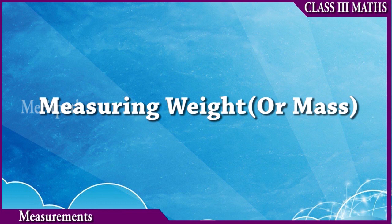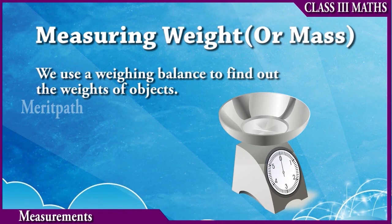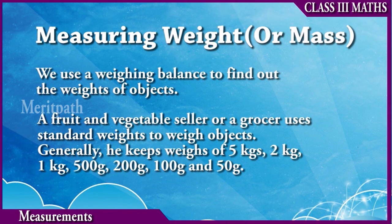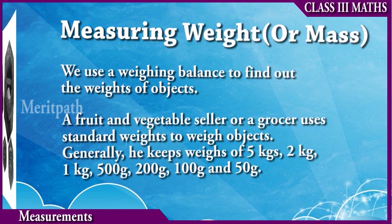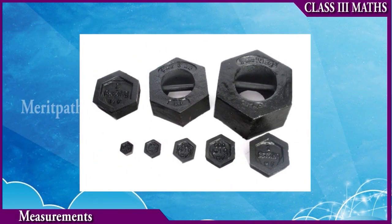Measuring weight or mass. We use a weighing balance to find out the weights of objects. A fruit and vegetable seller or grocer uses standard weights to weigh the objects. Generally, they keep weights of 5 kilograms, 2 kilograms, 1 kilogram, 500 grams, 200 grams, 100 grams, and 50 grams. Here we can observe 10 kilograms, 5 kilograms, 2 kilograms, 500 grams, 200 grams, 100 grams, and 50 grams.